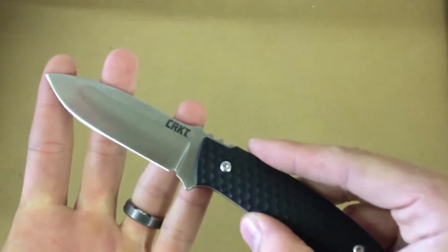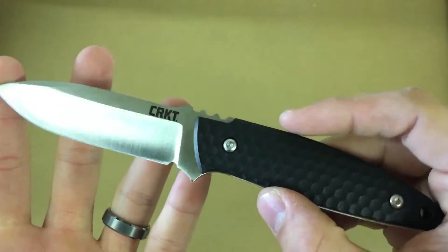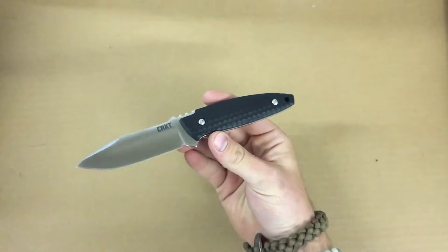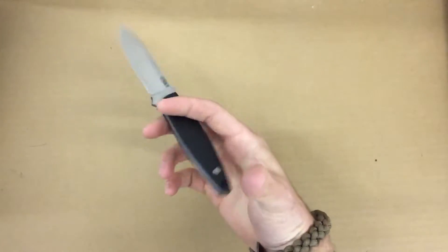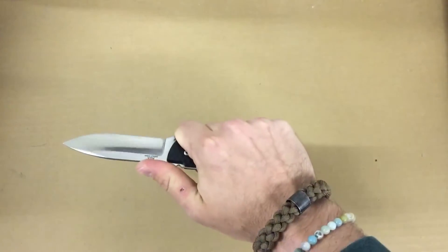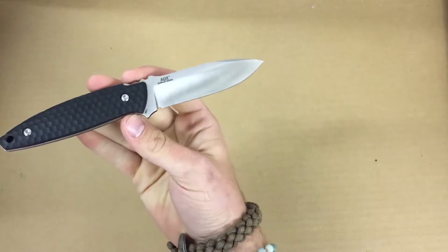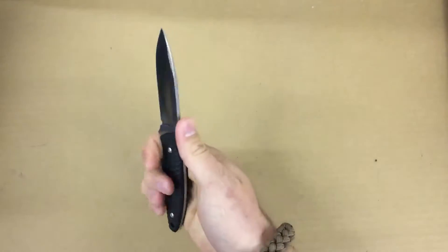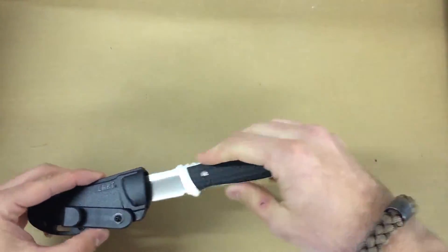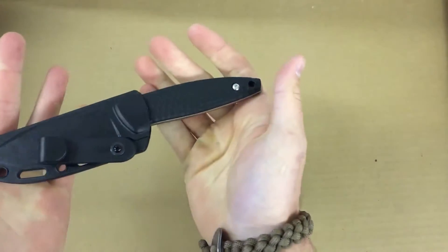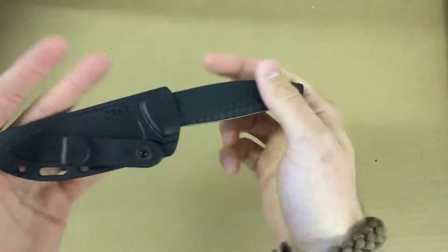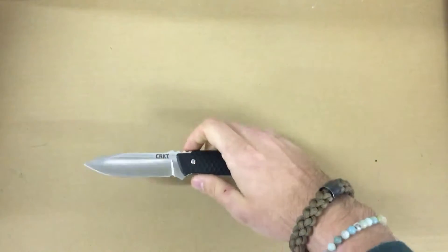Blade length on this guy is three and a half inches. Overall length here is seven and a half inches, so around a four inch handle. Got a weight of right at 2.9 ounces, so this thing is ultra light for its size and its capability. I think that is without the sheath, usually those weights are.